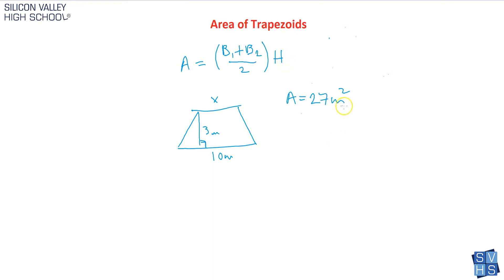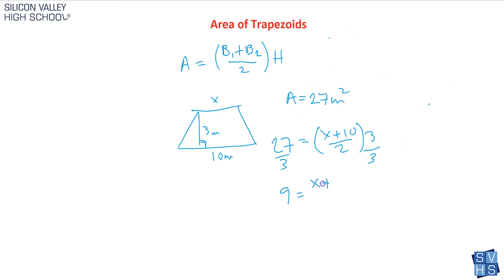If the area is 27, plug 27 in for A. Base 1 is x since we don't know it, plus base 2 which is 10, all over 2, times the height which is 3. To solve for x, first divide both sides by 3, giving you 9 = (x + 10) / 2. Then multiply both sides by 2 to get 18 = x + 10. Subtract 10 from both sides, and x = 8.